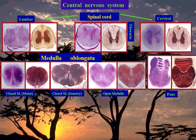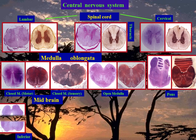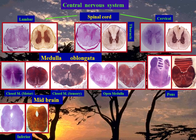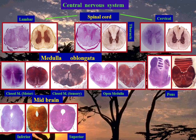Midbrain is the upper part of the brain stem. Two levels of the midbrain are examined: inferior midbrain, stained with hematoxylin and eosin and silver, and superior midbrain, stained with hematoxylin and eosin and silver.